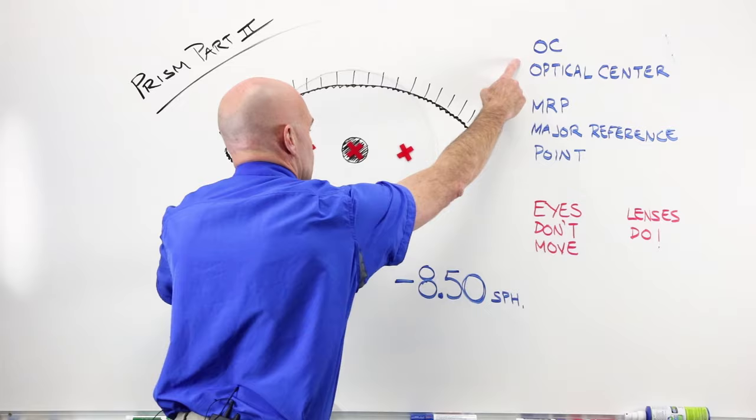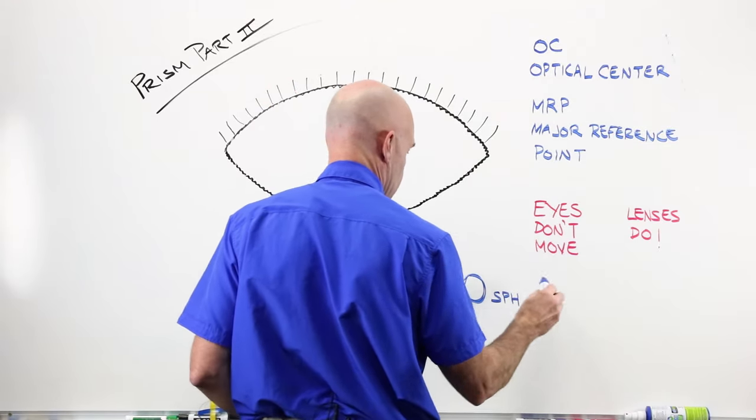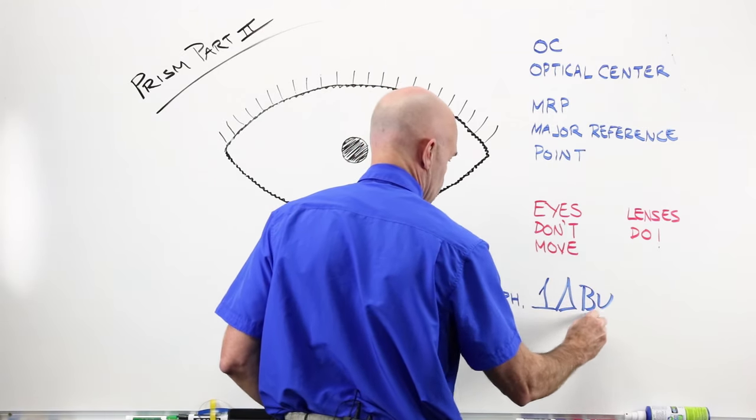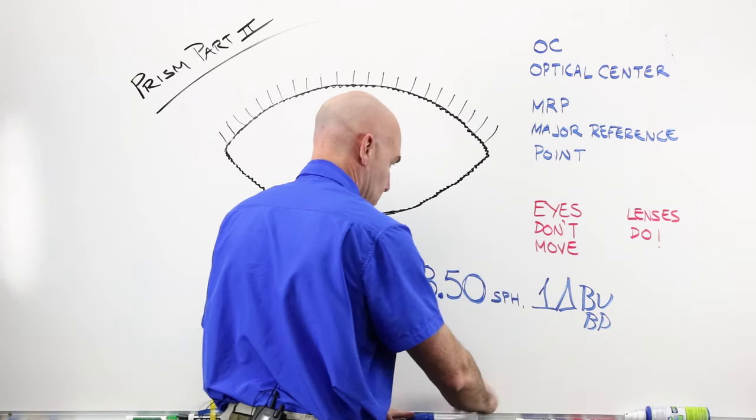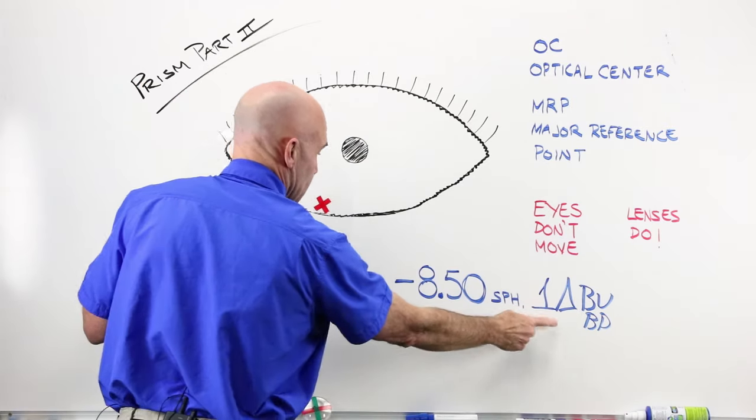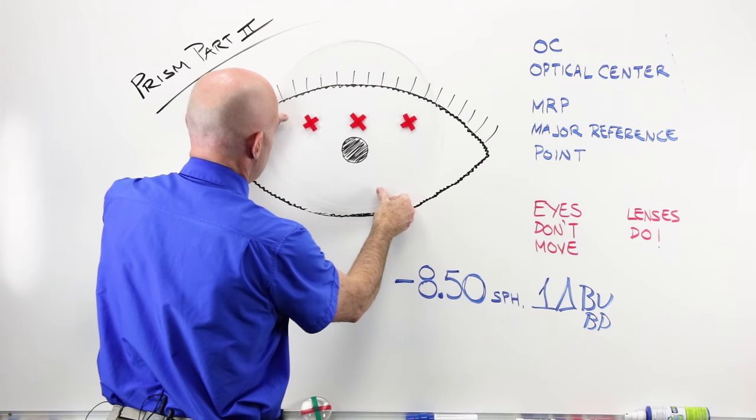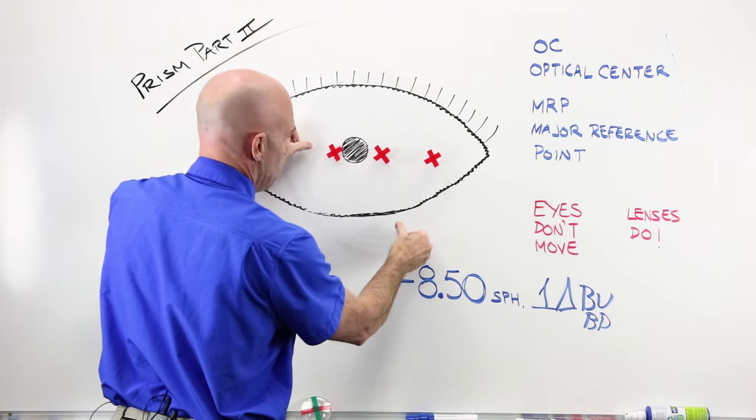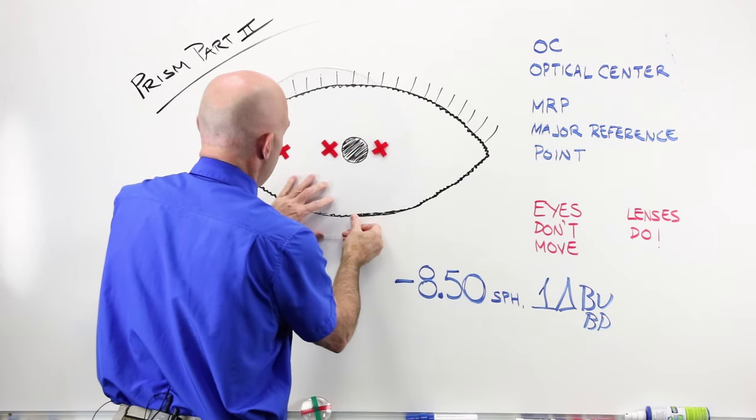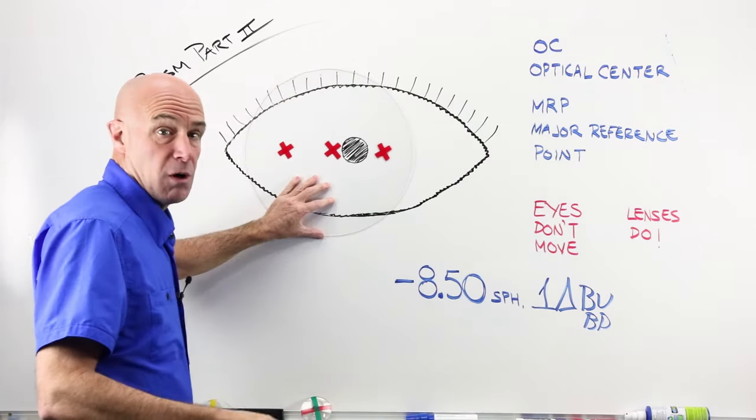Optical center. If the person came in with a script of 850 sphere with one diopter base up, base down, whatever it might be, we're gonna get to that next. So don't get yourself wound up quite yet. And I deliberately move my optical center here, here, here, or here. Base up, base down, base in, base out, whatever. Then this point becomes my MRP or my major reference point.